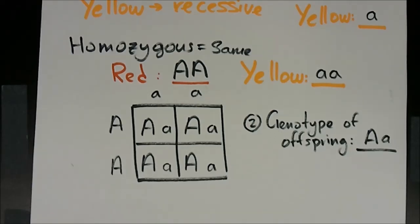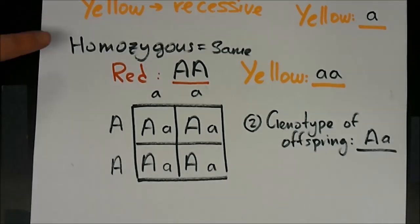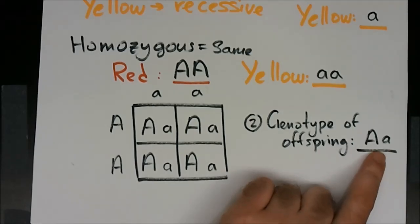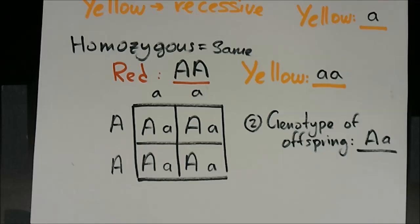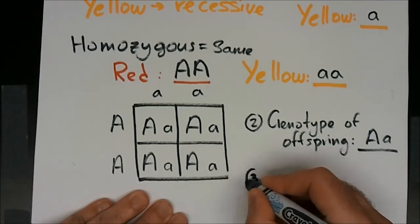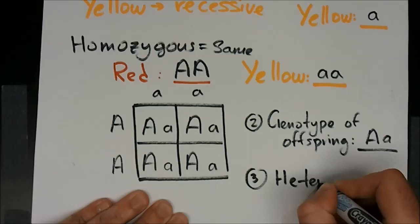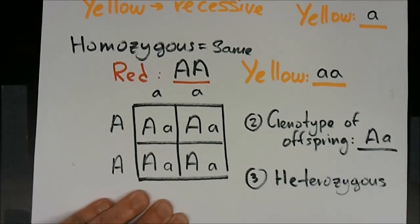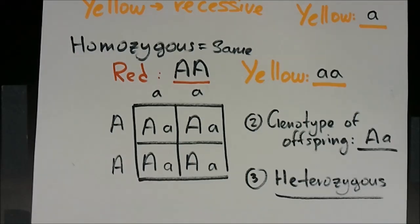Question three asks: are the offspring homozygous or heterozygous? Homozygous means the same letters; heterozygous means different. We have a capital A and a lowercase a — they are different types of A, so the offspring are heterozygous.